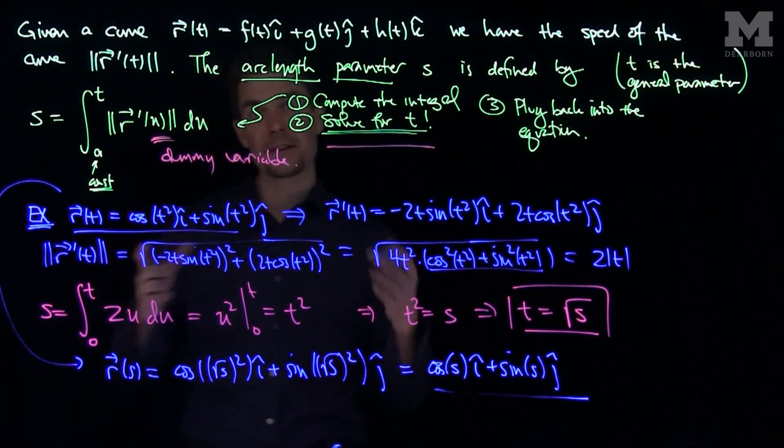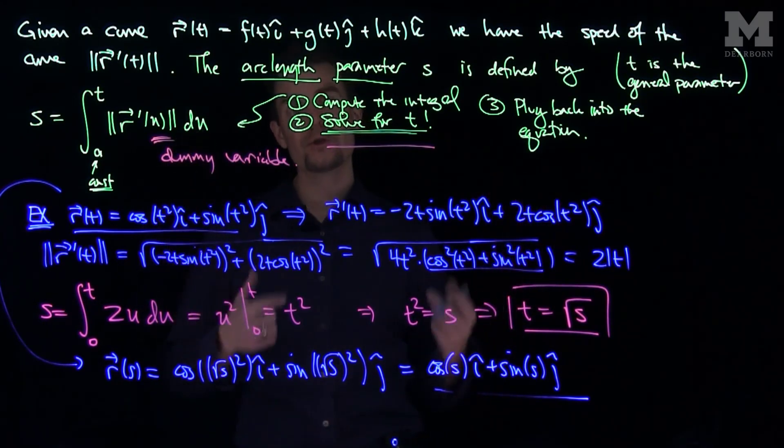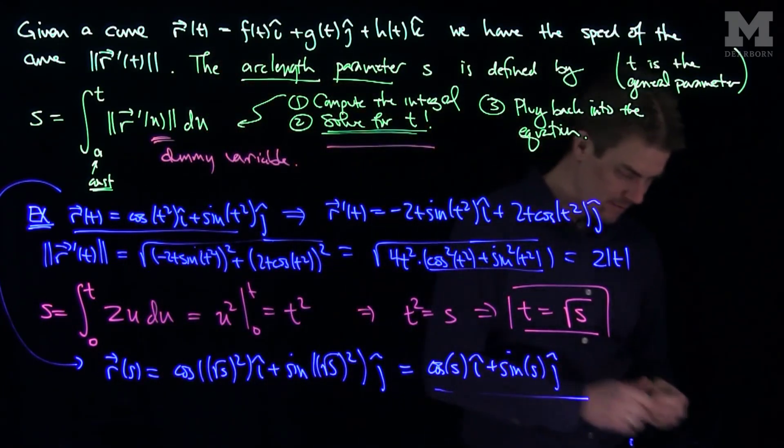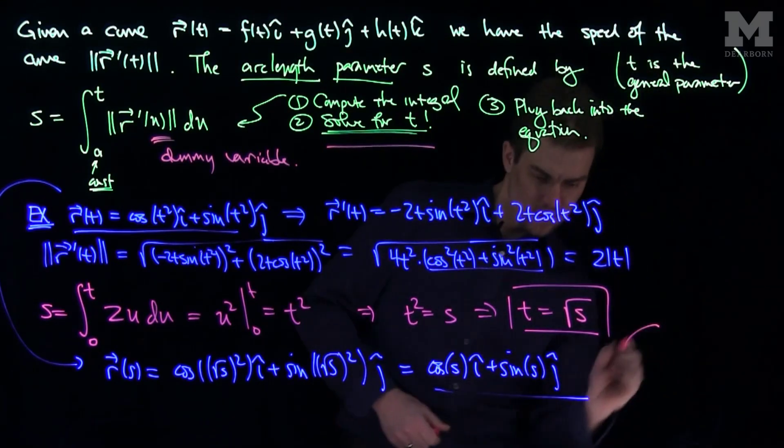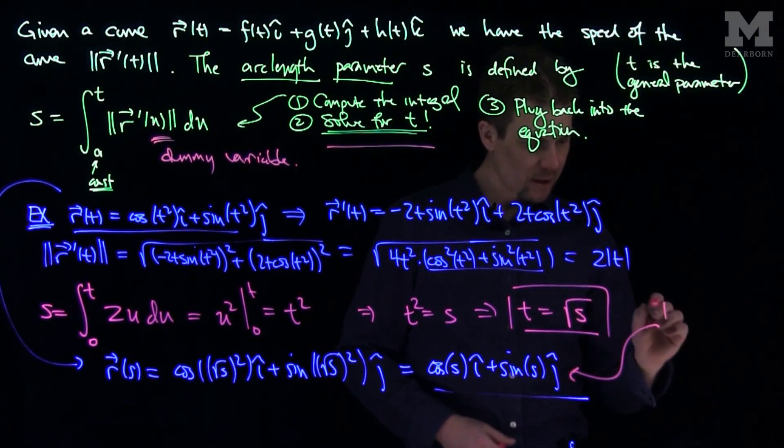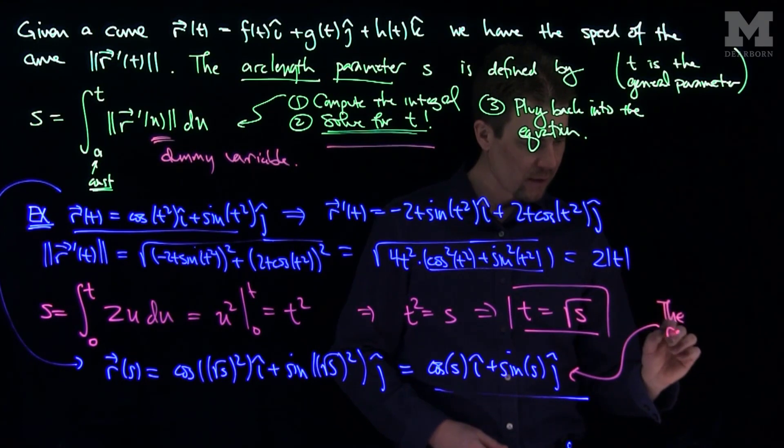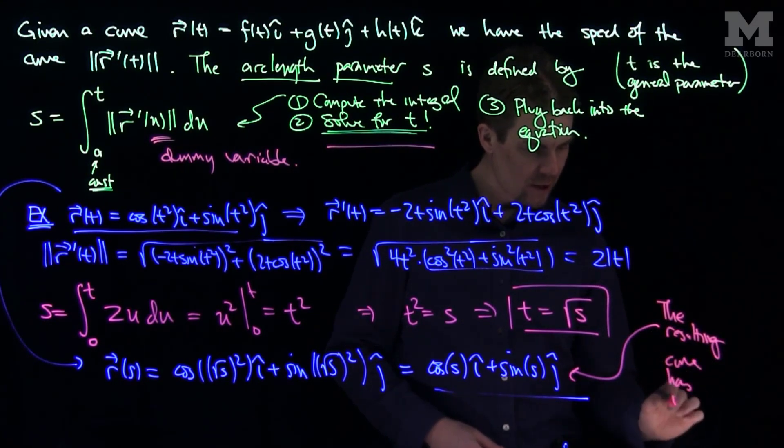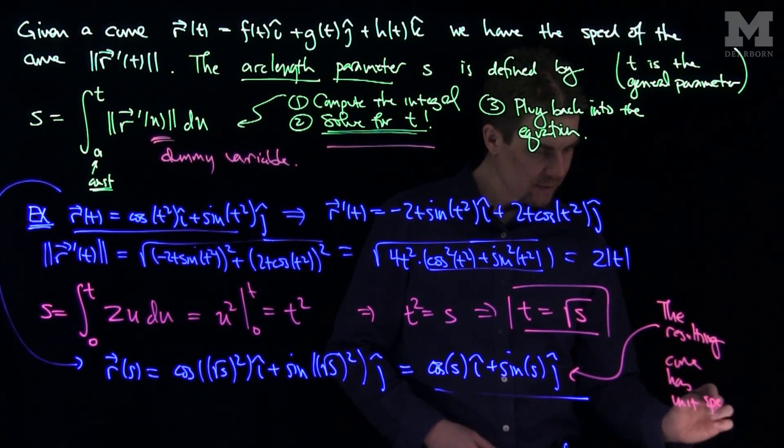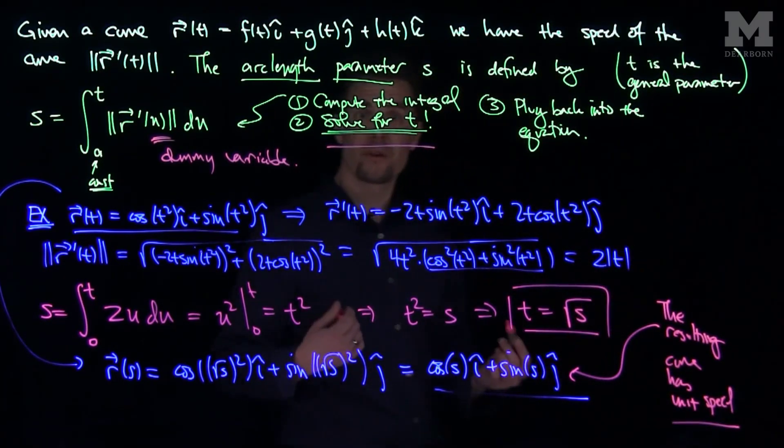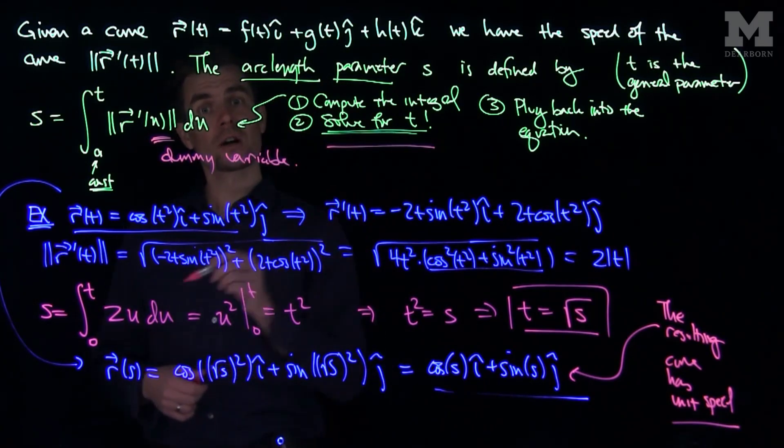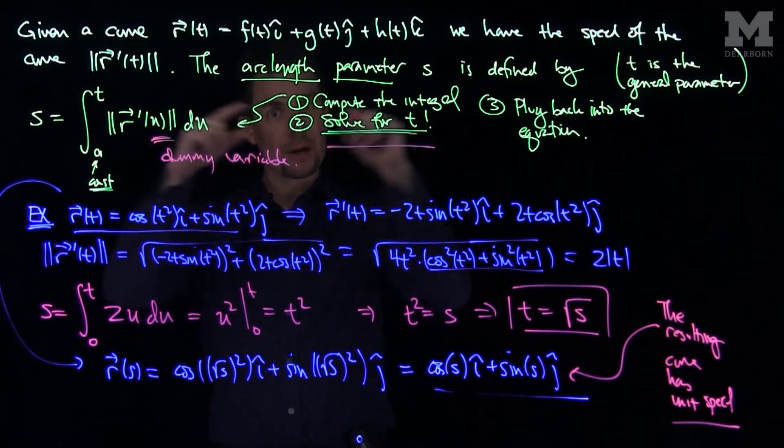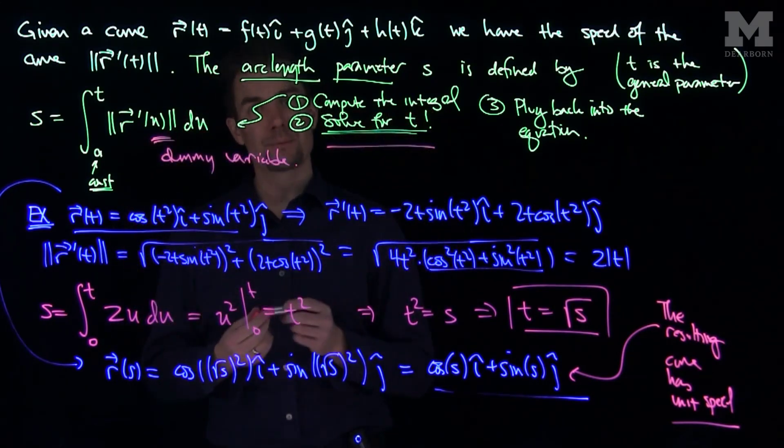So what's happened is by finding this arc length parameterization, we've put the curve into a new parameter, and this new parameter has unit speed. This curve, the resulting curve, has unit speed. This is always a feature of arc length parameterization. If you put a curve into arc length parameterization by this procedure, the resulting curve will be the same image, it will just have unit speed.